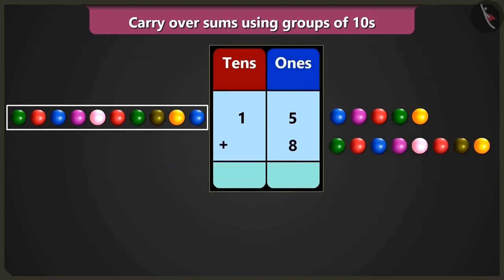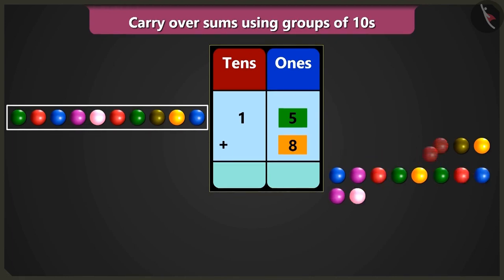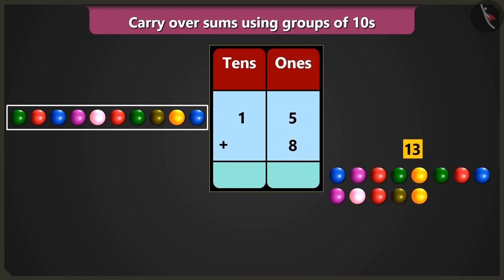Now, in the box of ones, when we add 5 ones and 8 ones, then after 5: 6, 7, 8, 9, 10, 11, 12 and 13 marbles.